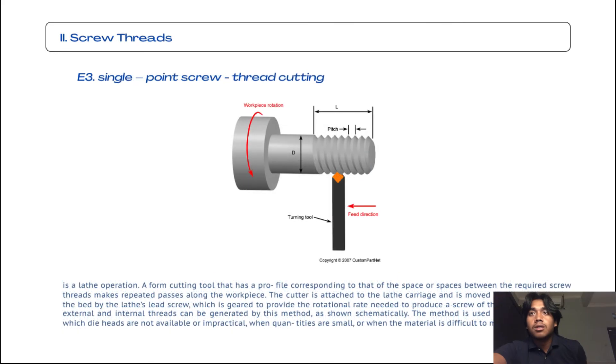They are usable for diameters up to about 24 inches or 600 mm. The third subtopic from screw threads is single point screw thread cutting. It's a lathe operation where a form cutting tool that has a profile corresponding to that of the space between the required screw threads makes repeated passes along the workpiece. The cutter is attached to the lathe carriage and is moved longitudinally along the bed by the lead screw, which is geared to provide the rotational rate needed to produce a screw of the proper pitch. Both external and internal threads can be generated by this method. This method is used for large screws, as we can see in the example photos, for which die heads are not available or impractical, when quantities are small, or when the material is difficult to machine.